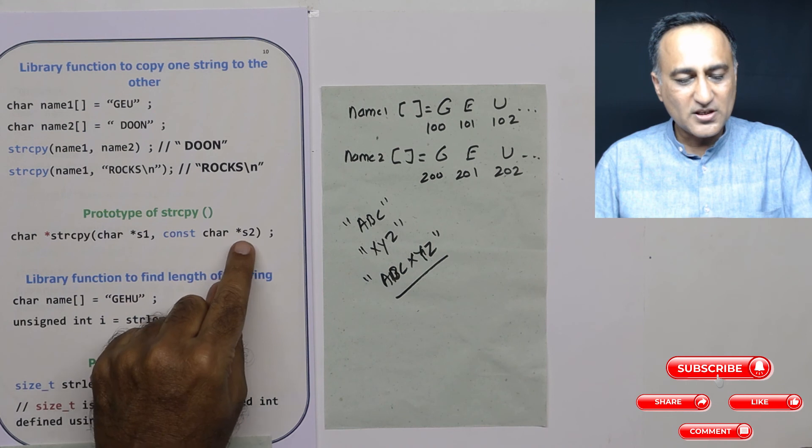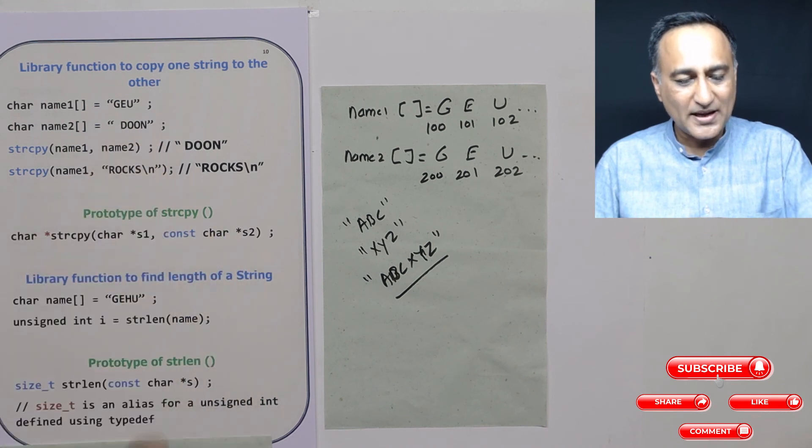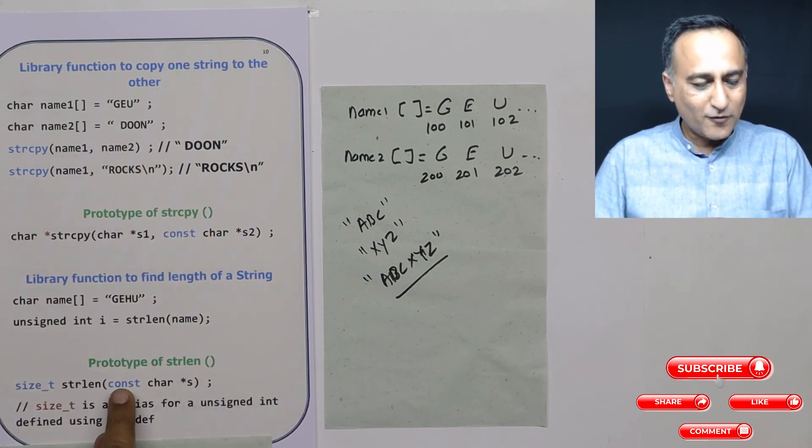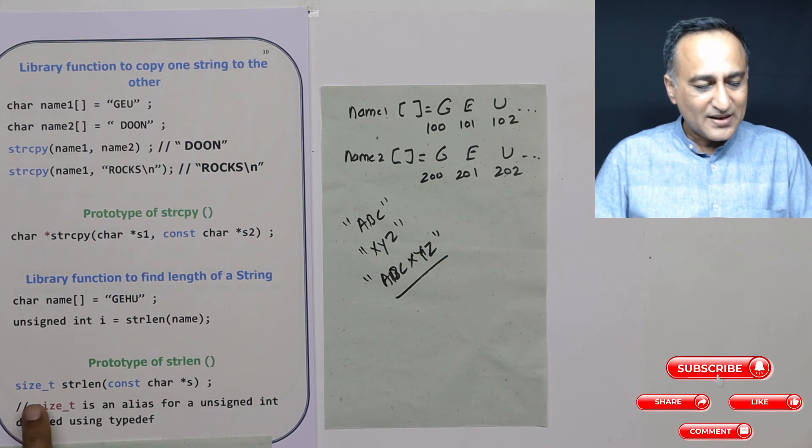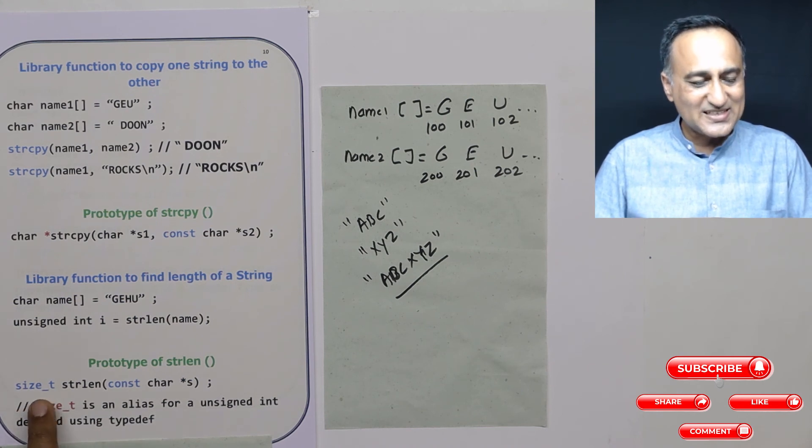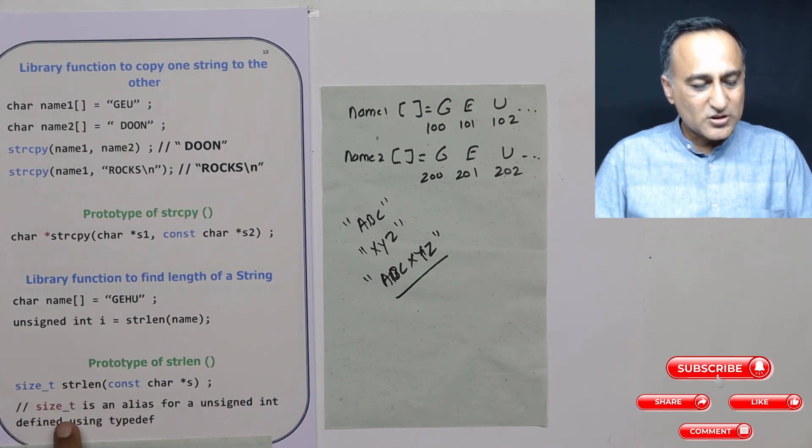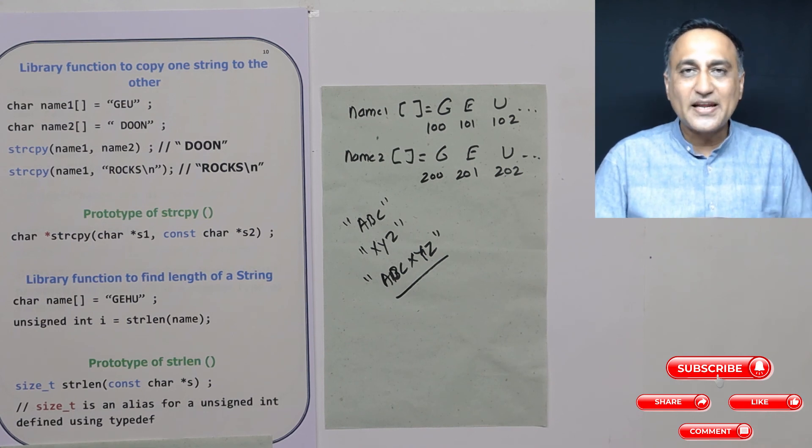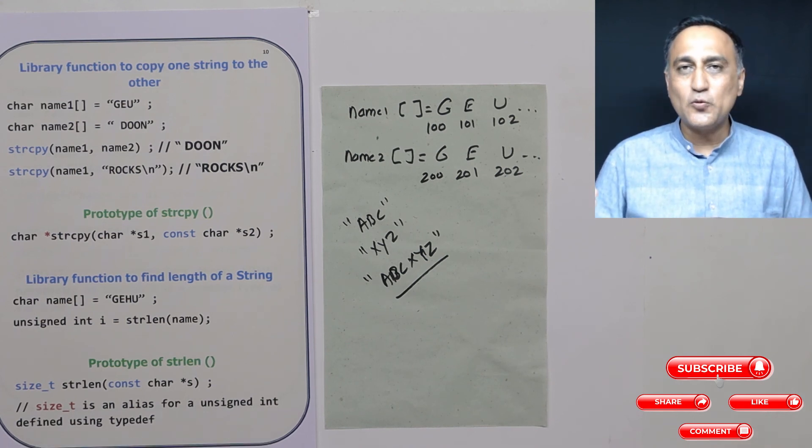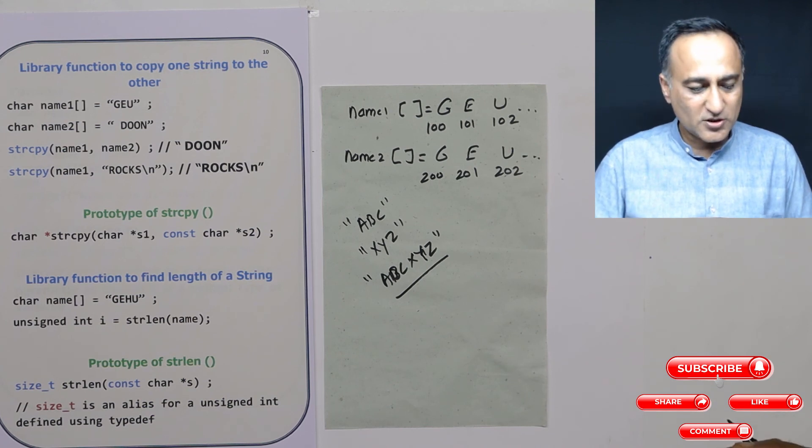Whereas the pointer, it can be any other address. The important thing is constant char means I can't change gehu. Similarly here constant char s2, I can't change dune. It has to be as it is. So it will find the length and it will return. What is this size_t? Size_t is nothing but it's an unsigned integer type of variable. So size_t is an alias for unsigned int defined using typedef. You will understand typedef when we come across structures in the next few sessions.